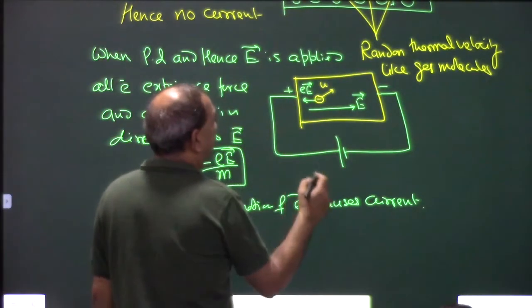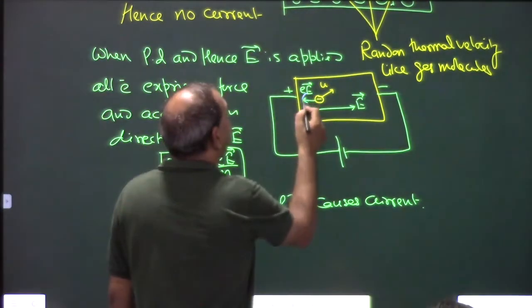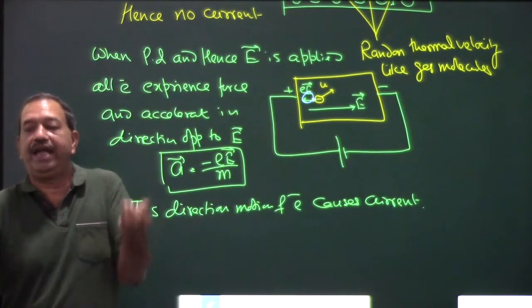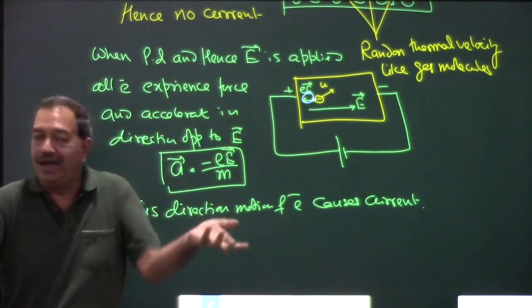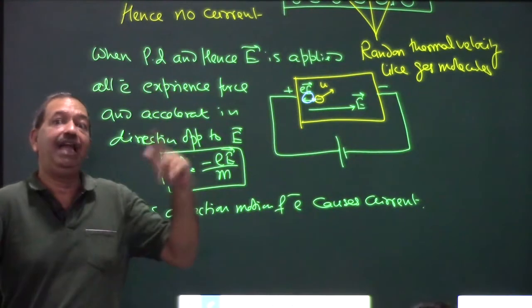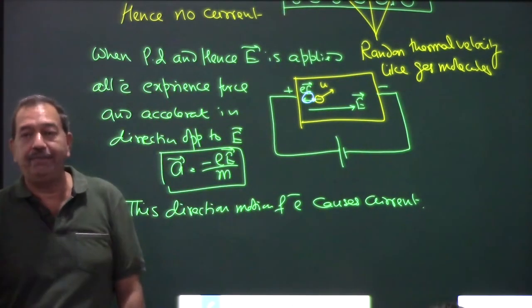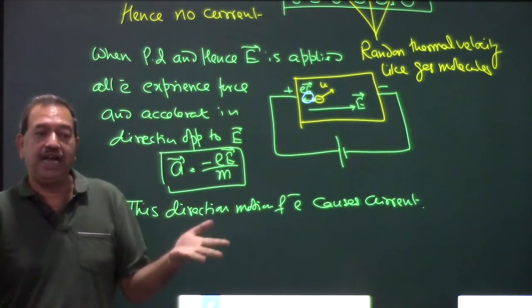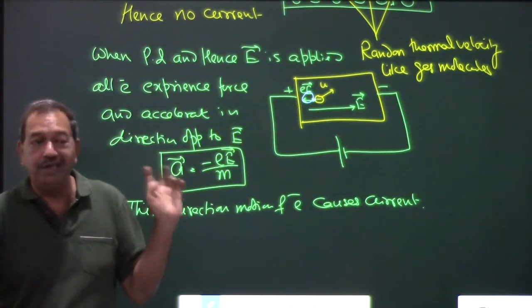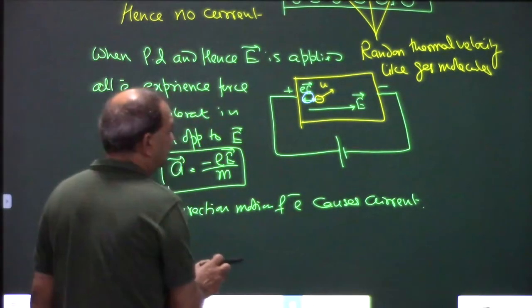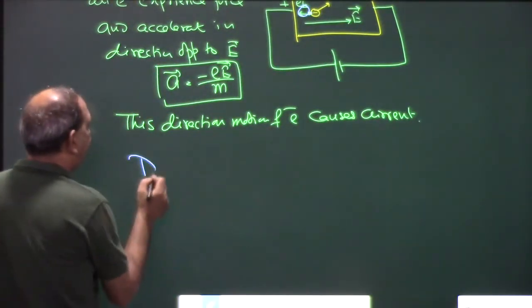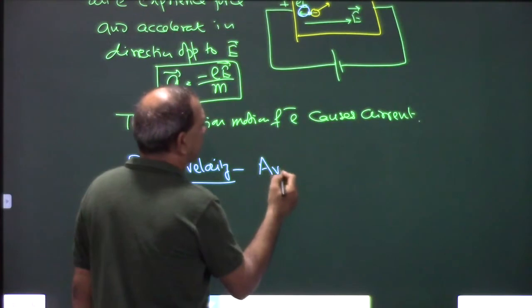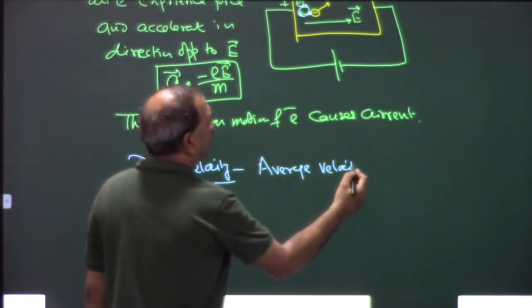When the electron moves, it gains energy but then collides with atoms. The electron accelerates, gains energy, and then collides with an atom, passing that energy to it. That energy appears in the form of heat. So whenever charge flows, heat is necessarily developed.